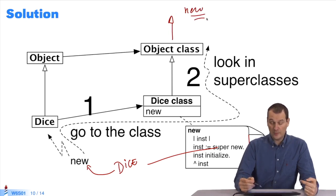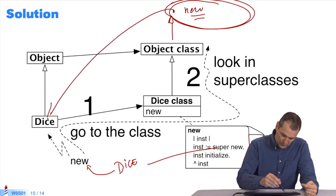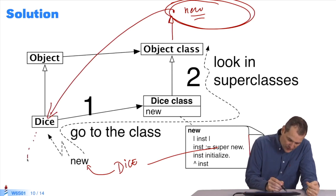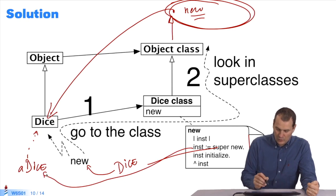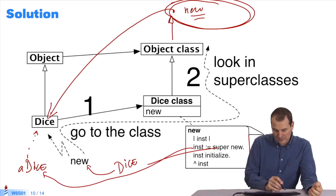What about lookup? We said that the method is defined here, and we apply it on the receiver. I apply it on Dice. And this gives me a new instance. I'll draw it in. It returns an instance, a Dice, and inst is pointed at this new instance. So inst is a new Dice. I send the initialize message to inst, and then I return it.